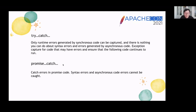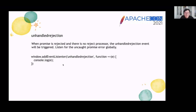Next is Promise catch: it can catch errors in Promise code, but syntax errors and asynchronous code errors cannot be caught. UnhandledRejection: when a Promise is rejected and there is no rejection handler, the unhandledrejection event will be triggered. Listen for the unhandled Promise error globally. For the code, it handles a missed Promise exception.